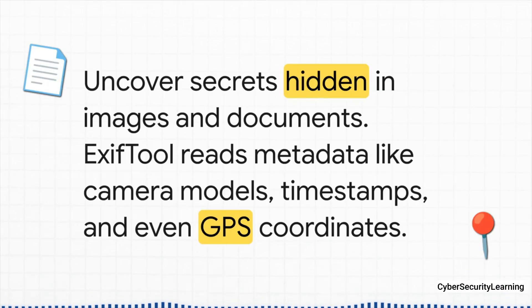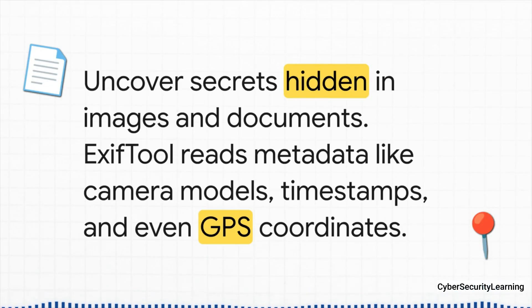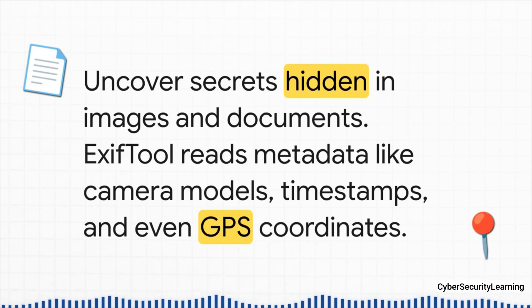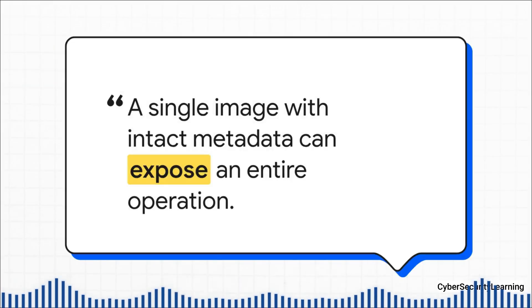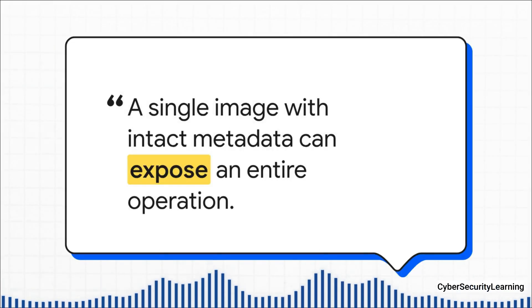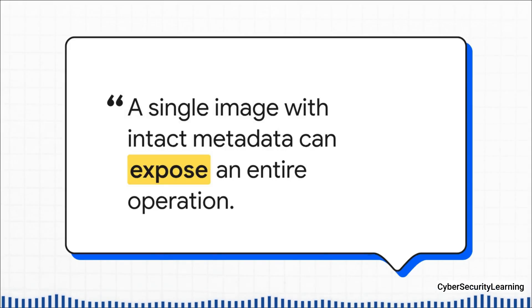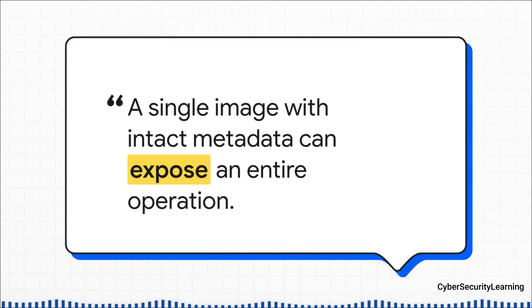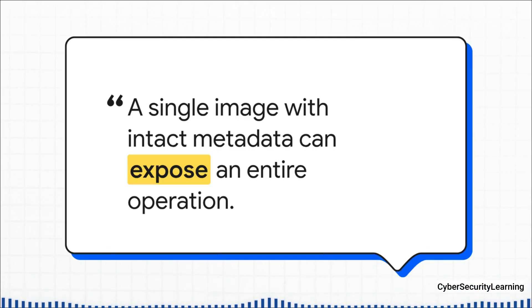All those files Torbot downloaded can have secrets of their own hidden inside them. To read that hidden data, you need a specific tool, and the absolute gold standard is called EXIF tool. It's designed to extract metadata — data about data — from pretty much any file you throw at it. An operator can take insane precautions to hide their server, but then upload a single photo without stripping its metadata. EXIF tool can pull out the exact camera model, the precise time and date the photo was taken, and sometimes the holy grail: GPS coordinates that pinpoint a real-world location. It's a classic mistake, and it happens more than you'd think.